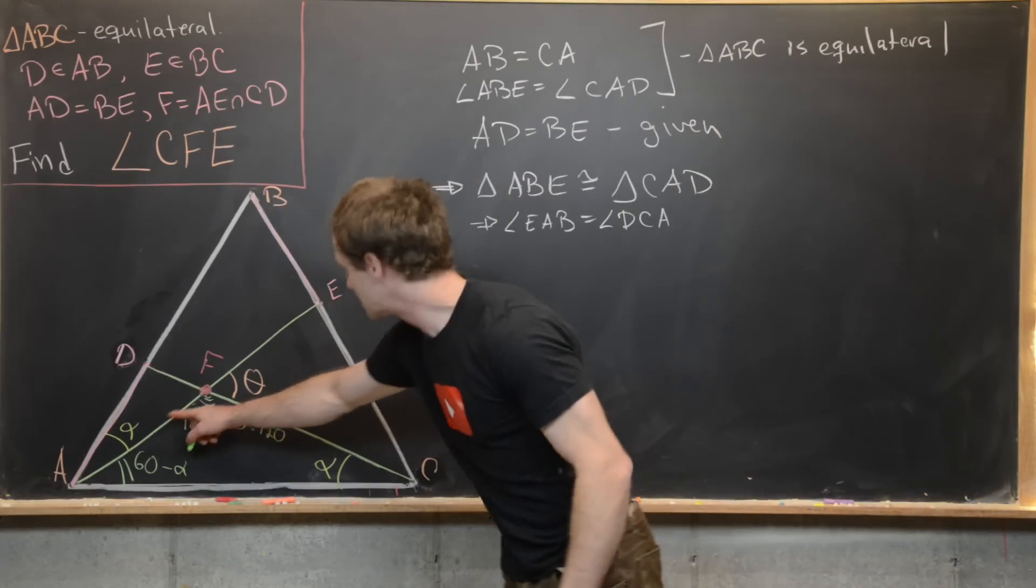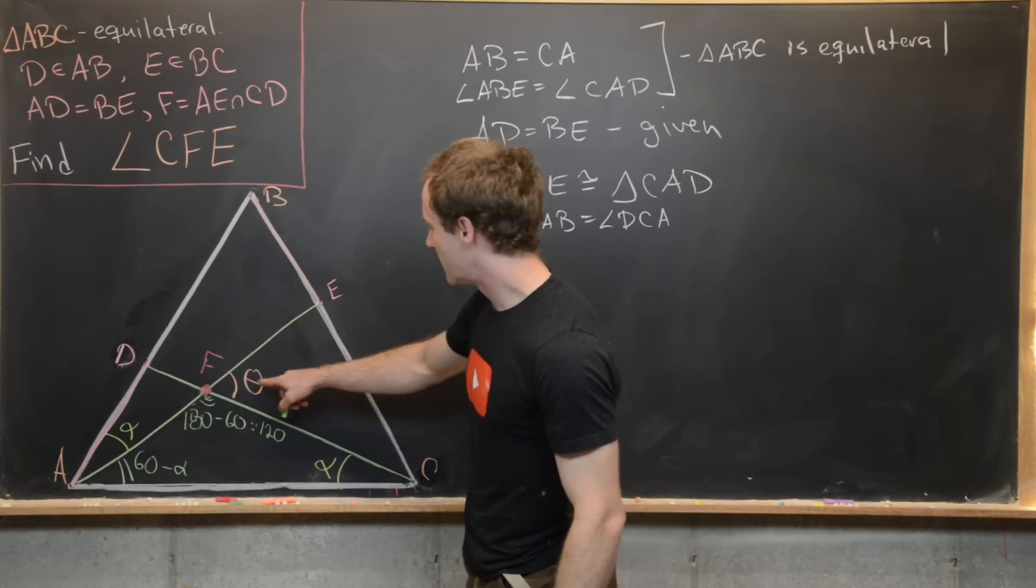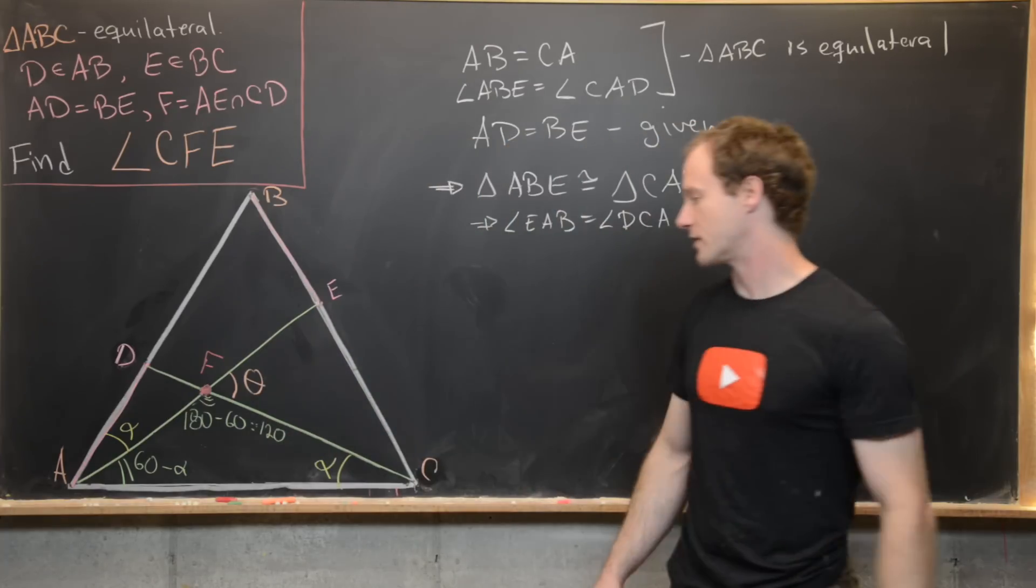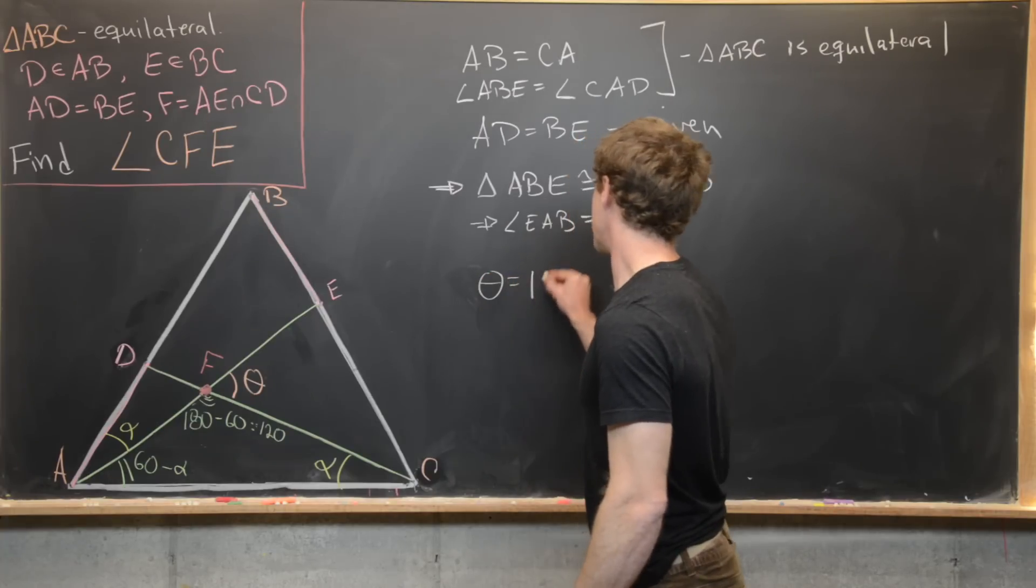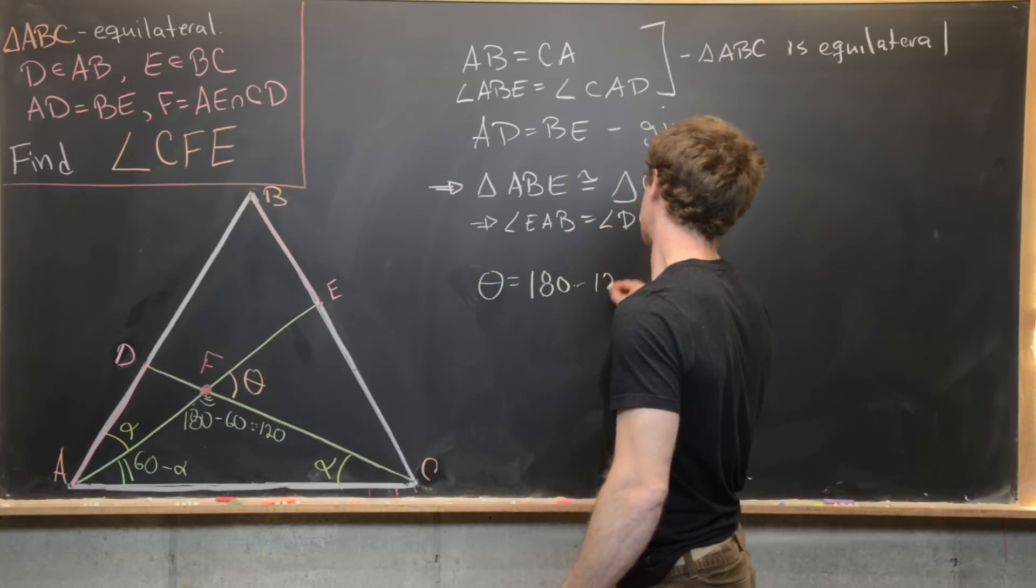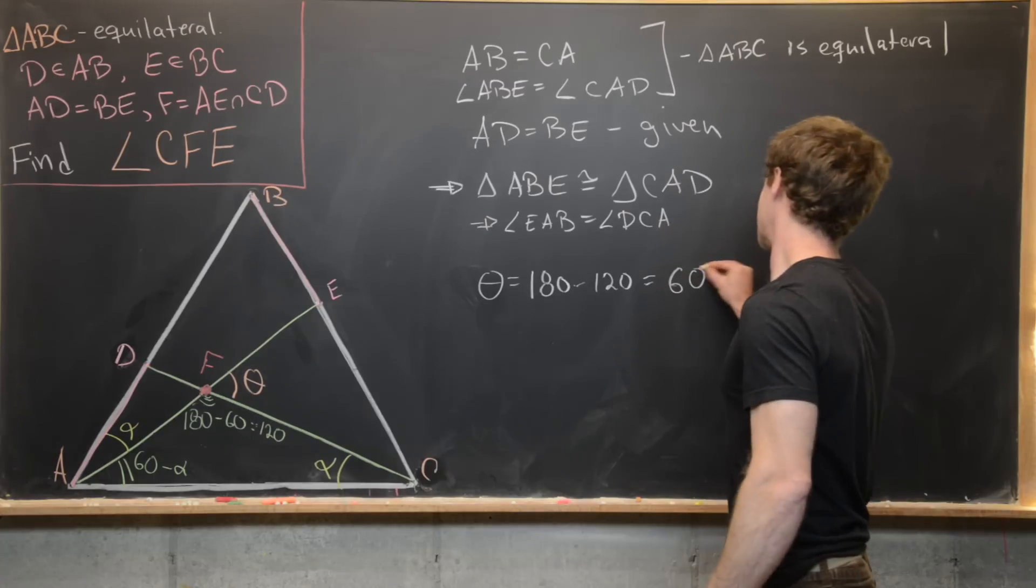And then finally, because this makes a straight line, theta is supplementary to 120. And so that means that angle measure theta is 180 minus 120, which is 60.